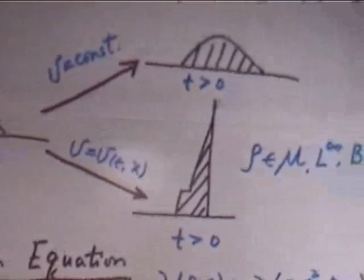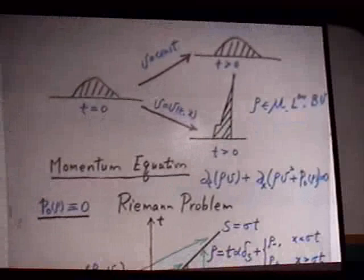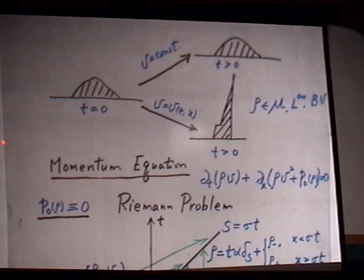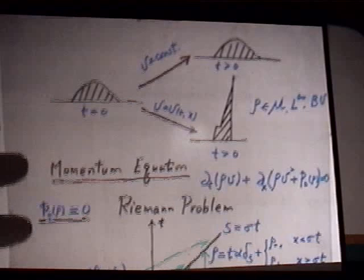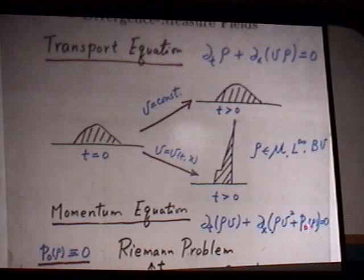In fluid dynamics, V is governed by the conservation of momentum, giving a system of equations for (ρ, V). Consider the very simple case where P(ρ) = 0, which models flow created by sticky particles as studied by Zeldovich and Shandarin. For a simple Cauchy-Riemann problem where we give piecewise constant data (ρ₋, V₋) and (ρ₊, V₊) at t=0, one can find a unique solution: the density forms a concentration along a line — this is a measure — and V is a jump function from left to right.